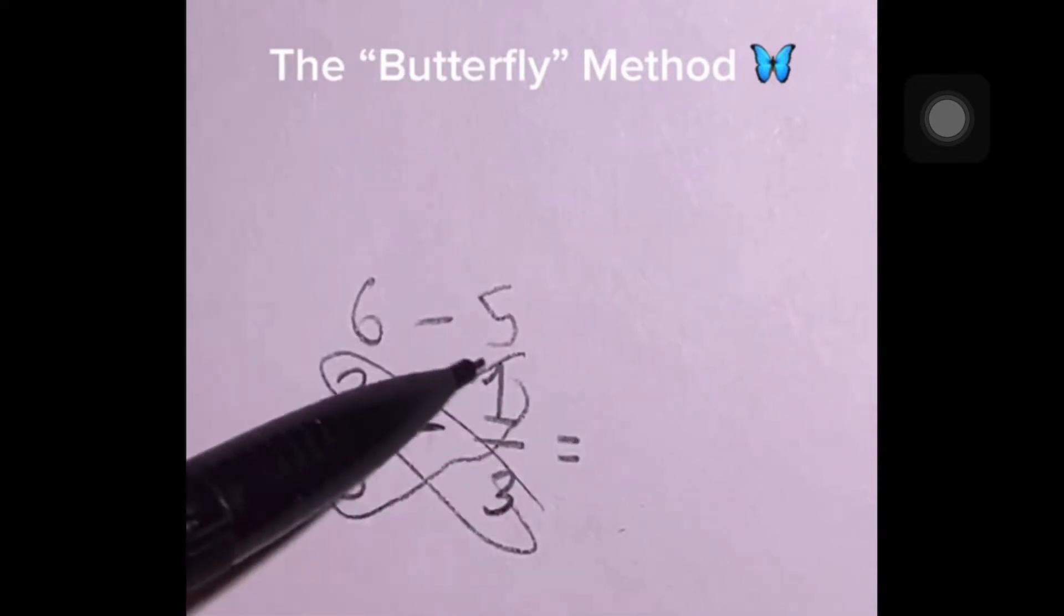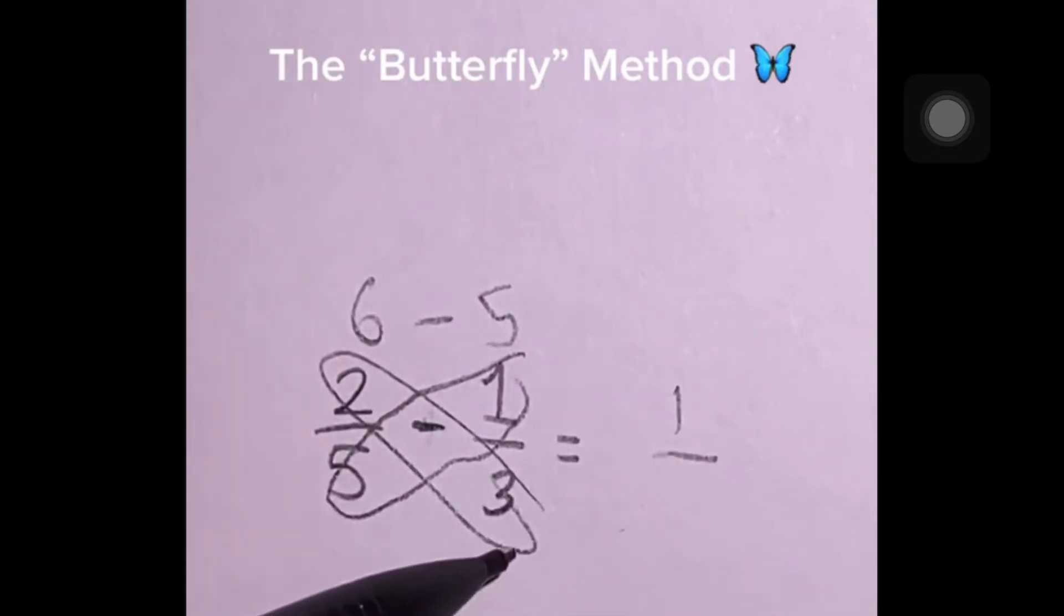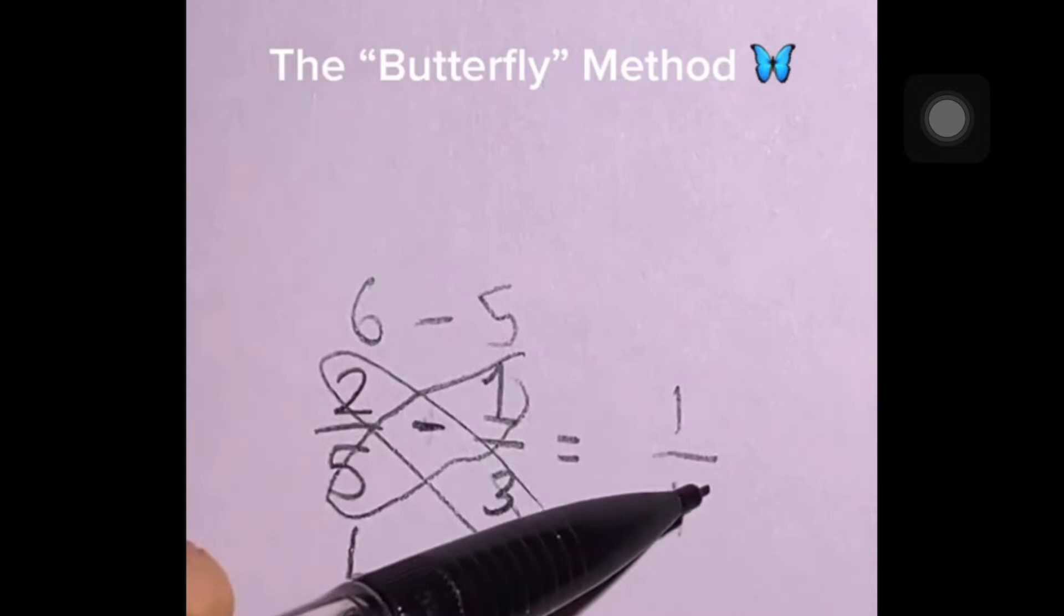This time we subtract 6 and 5 to get our numerator, so 6 minus 5 is 1. And to get your denominator, all you have to do is multiply the denominators, so 5 times 3 is 15, and our answer is 1/15.